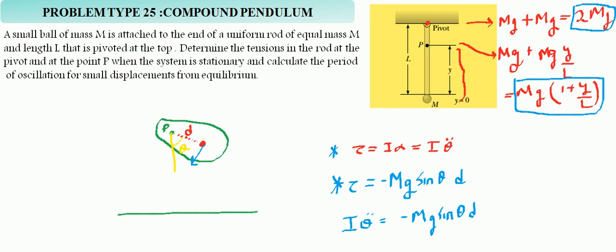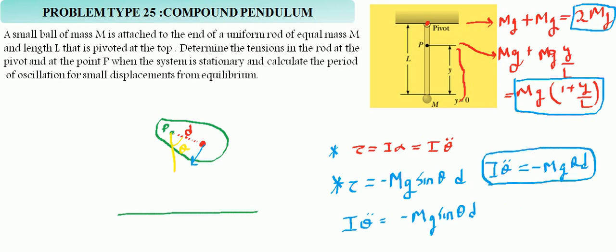This equation can be reduced further. For small angles, sine theta is approximately equal to theta, so: I theta double dot = −mgd theta. This is the differential equation for oscillation. From here, omega equals the square root of (Mgd / I), where I is the moment of inertia. This is the value of omega for any compound pendulum.